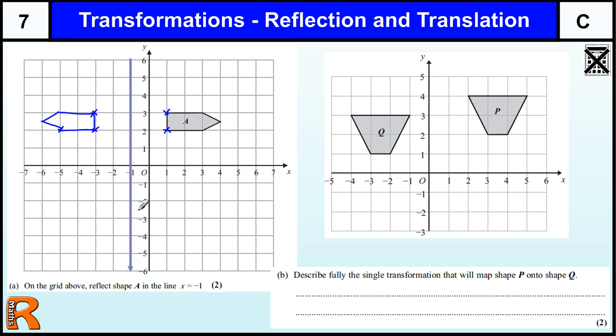OK, so that's the reflection. It's worth two marks. You would get one method mark if you reflected it vertically down to here, because you got the line going across. You thought this was x equals minus 1. So you would get one mark if you did it in the wrong direction. But obviously you need to get all the points right for two marks.